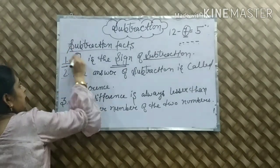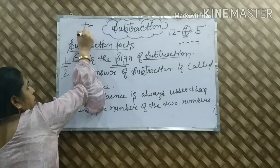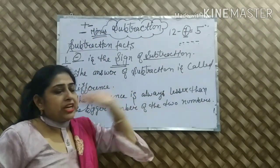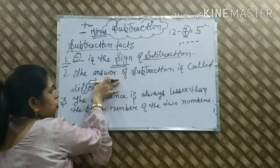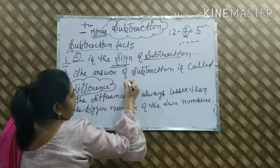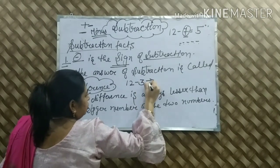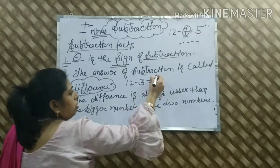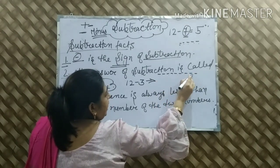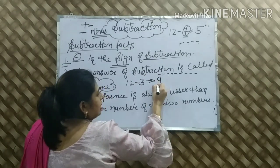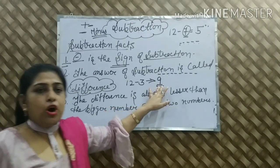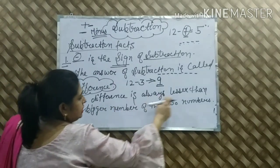Next point: the answer of subtraction is called the difference. Jo hum subtract karenge, uska jo answer aayega, usko bolte hain 'difference'. For example, 12 minus 3 — what will the answer be? From 12 we cut 3; counting after 3: 4, 5, 6, 7, 8, 9 — nine numbers remain. So our answer is 9. The answer of subtraction is called difference, so our difference is 9.